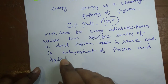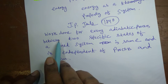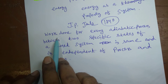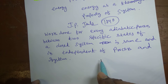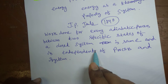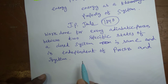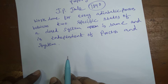This statement was proved by JP Joule's experiments. It was found from the series of experiments he conducted during the first half of the 19th century that if any closed system undergoes a series of adiabatic processes between two specified states, the work done remains the same for all the processes. In an adiabatic process there is no heat flow between the system and surroundings.